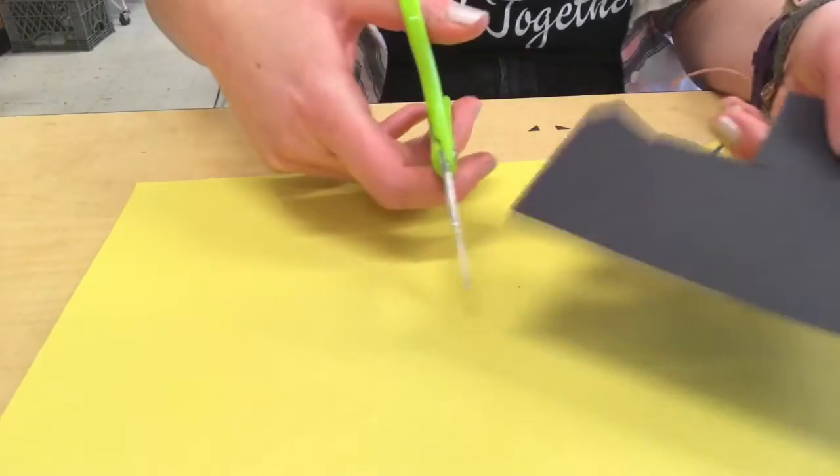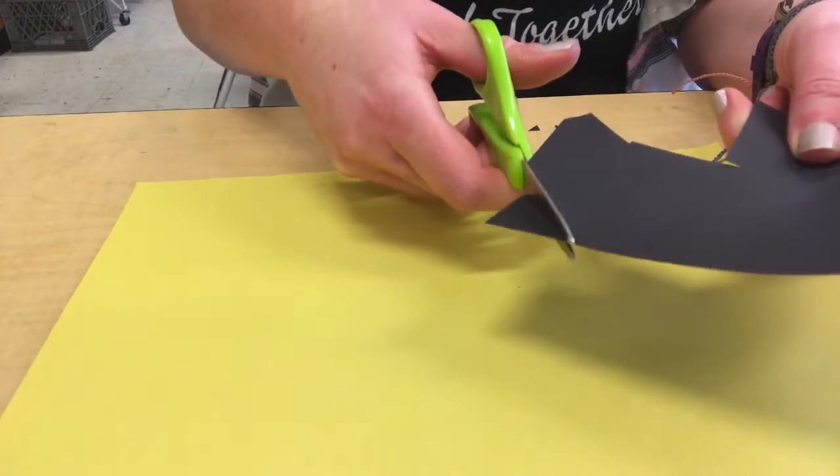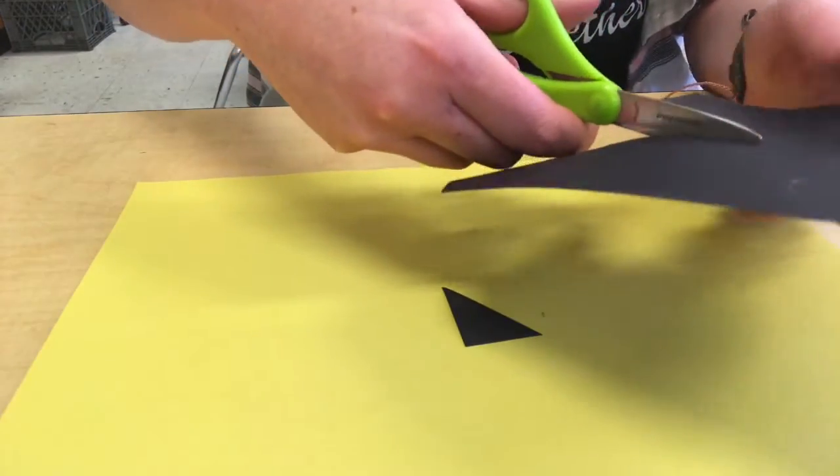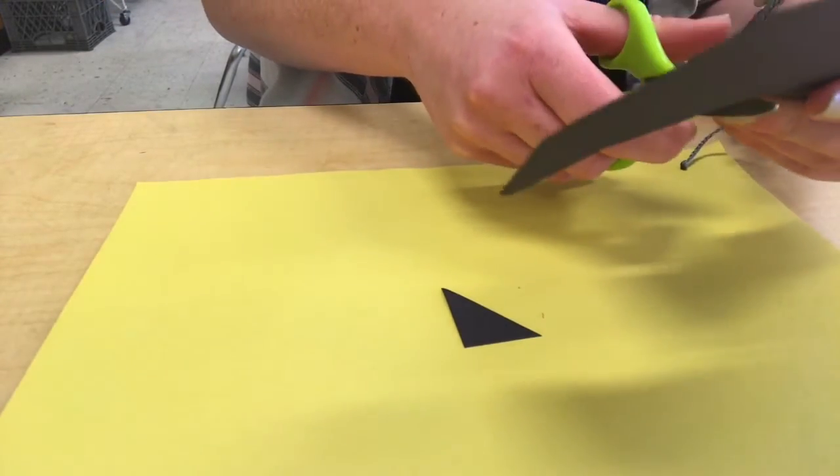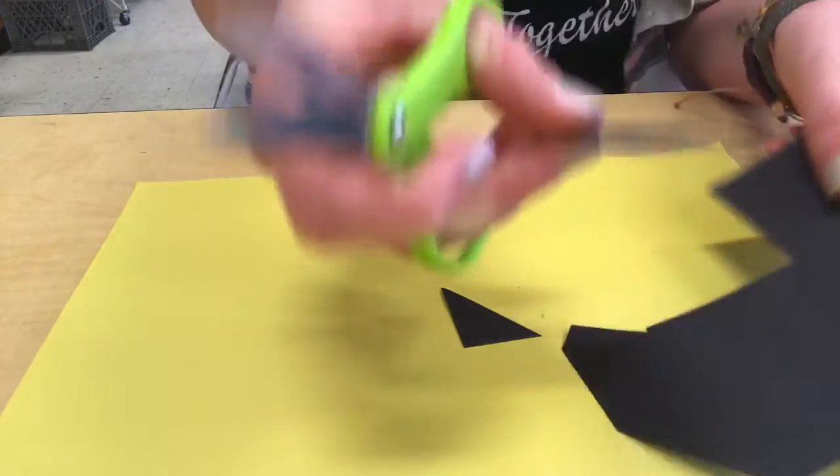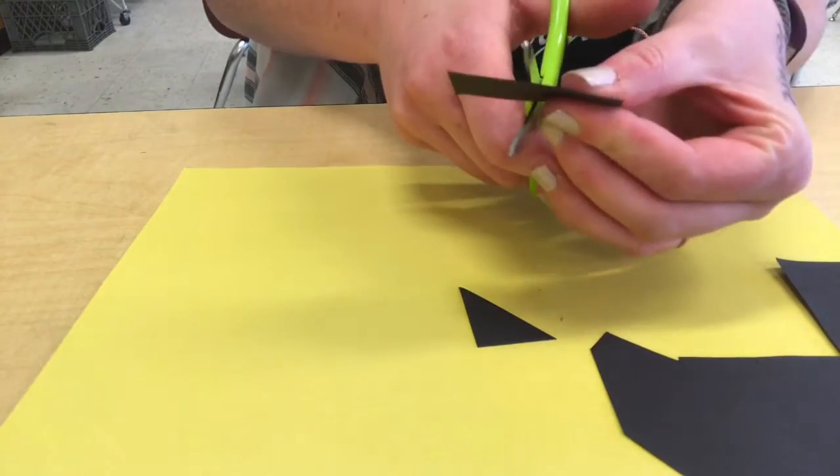So now we're ready to start. You take your smaller piece of paper and you're gonna start cutting shapes out of it. Any shape that you want. You can make triangles, squares, rectangles, circles, diamonds.